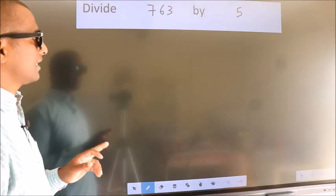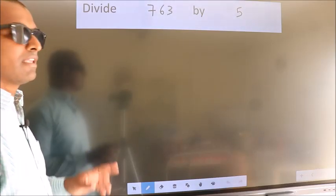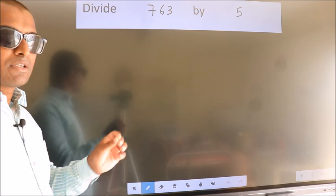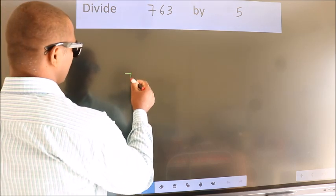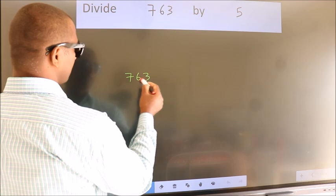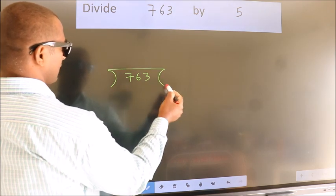Divide 763 by 5. To do this division, we should frame it in this way. 763 here, 5 here.